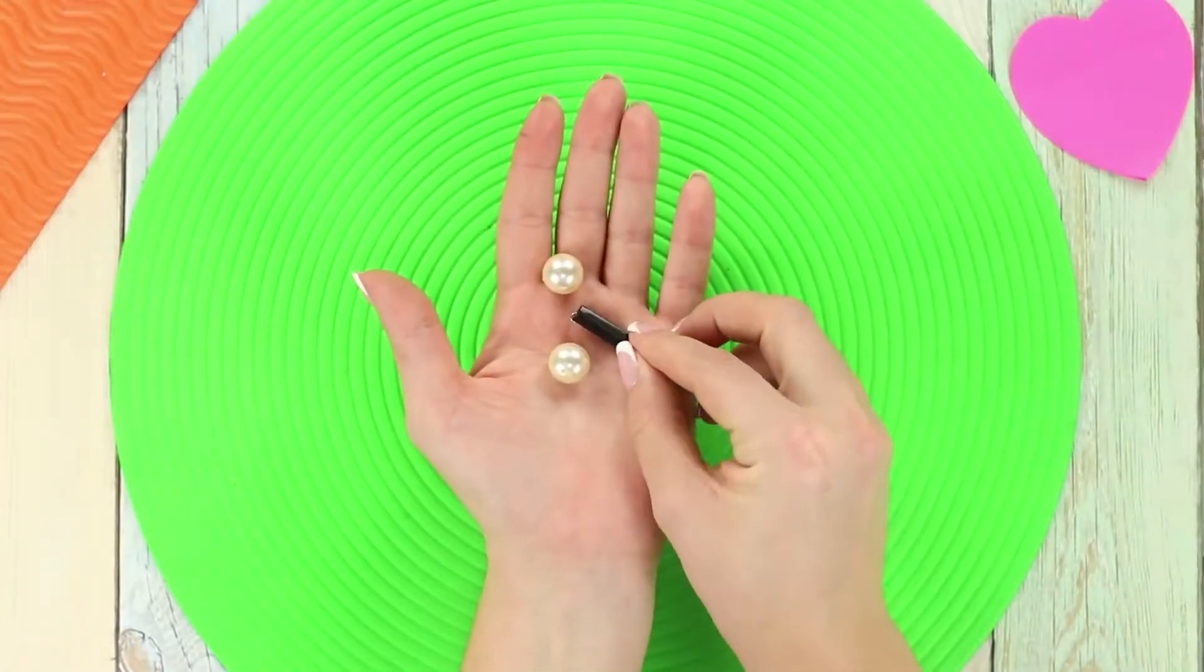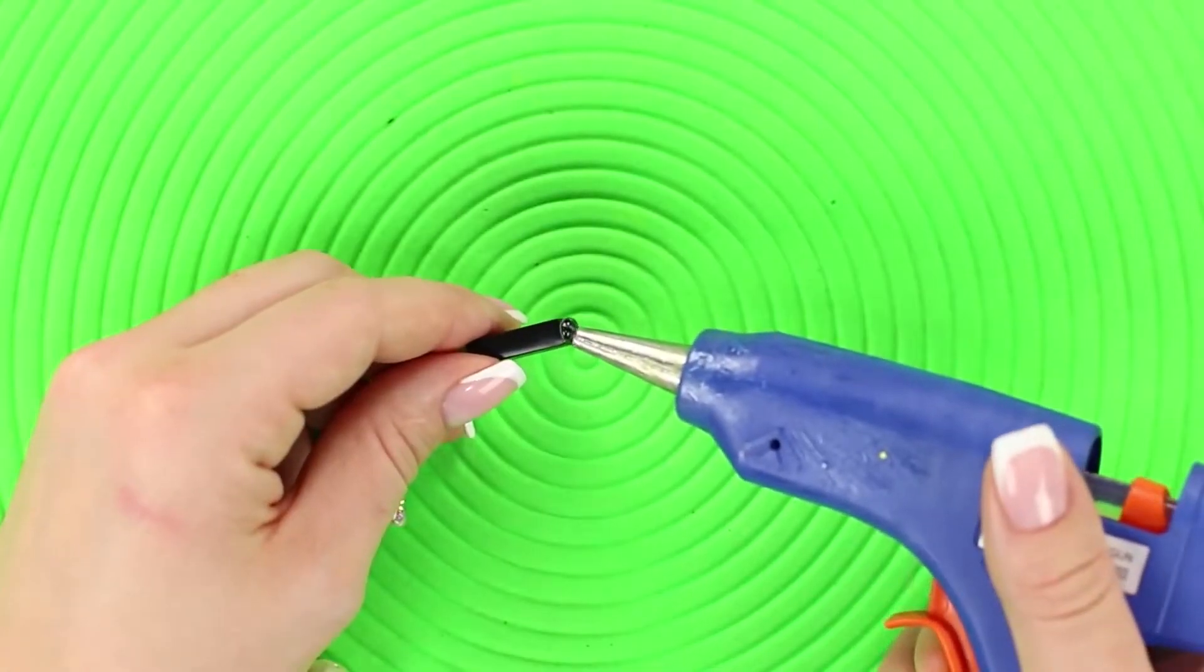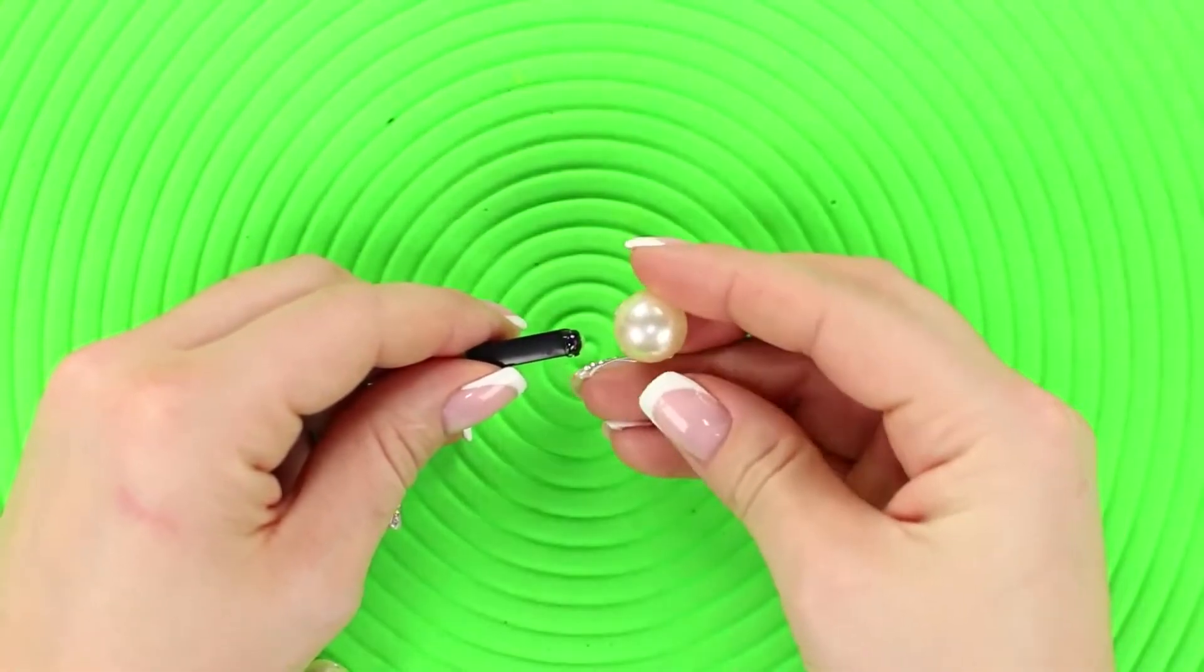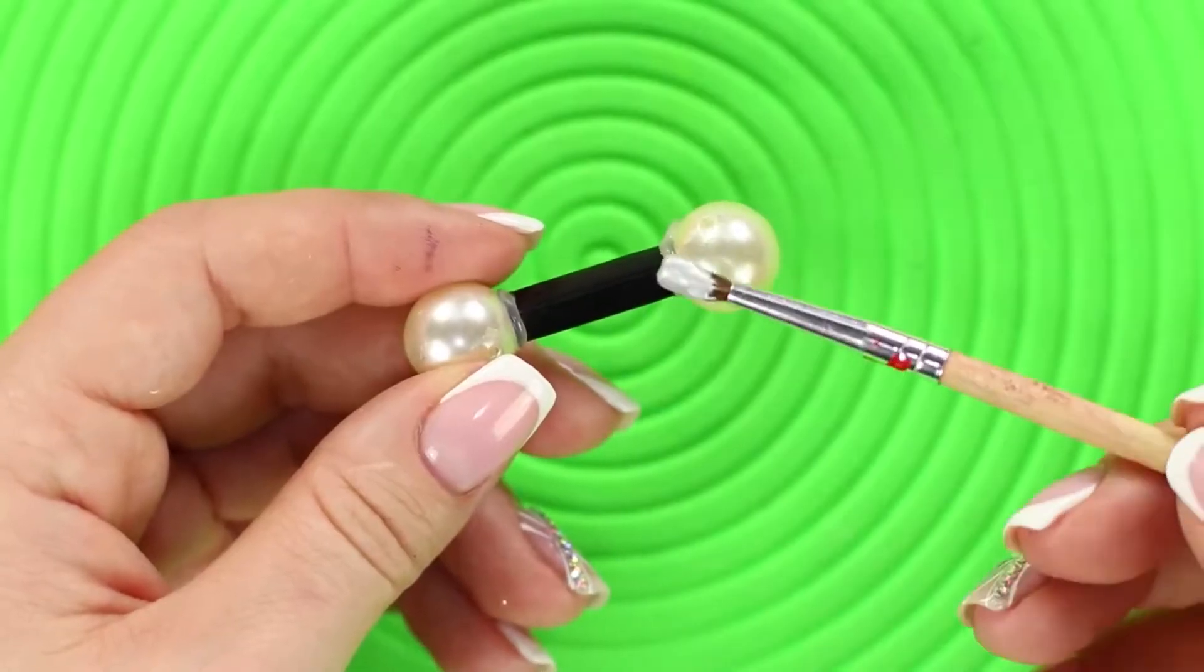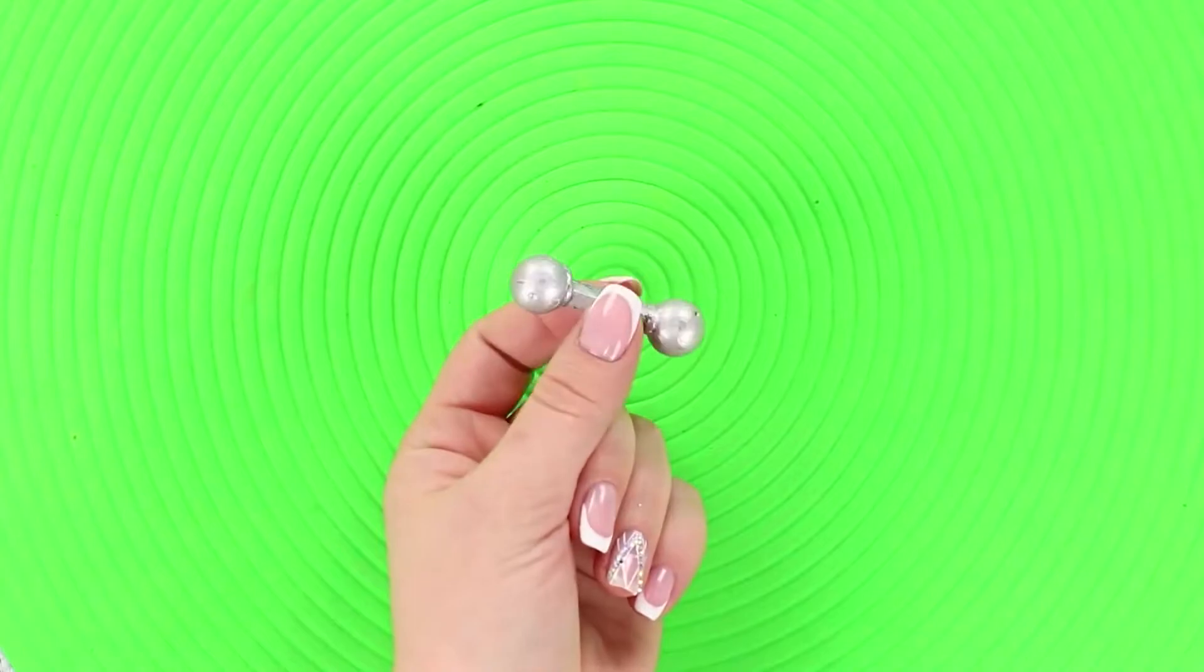Next, you need some beads - two round ones and an oblong one. Using a hot glue gun, attach round beads around the edges. Cover with silver paint. The result is a mini dumbbell!